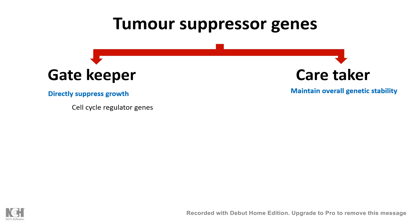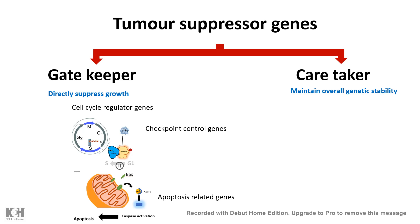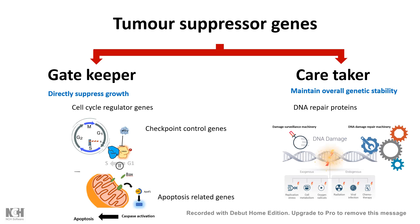Cell cycle regulatory genes and cell cycle checkpoint control genes fall under the gatekeeper category. Apart from that, genes which control apoptosis are also in this category. Caretakers involve mostly DNA repair proteins and several proteins which are important for maintaining DNA integrity and overall genomic stability.